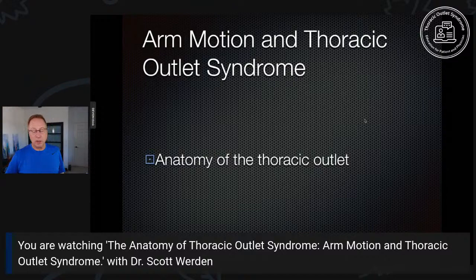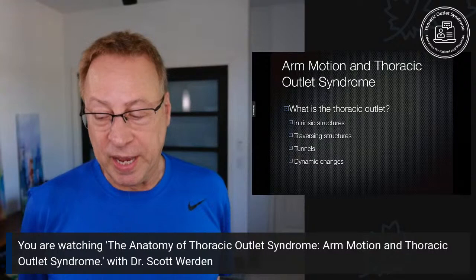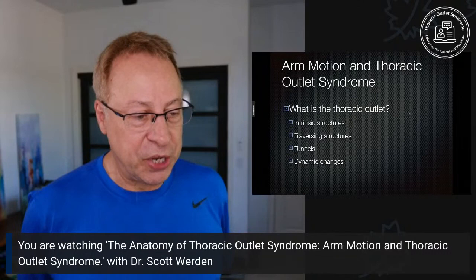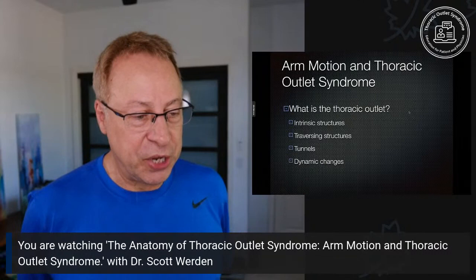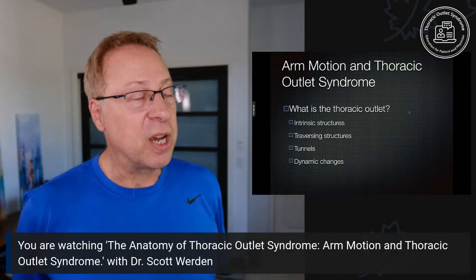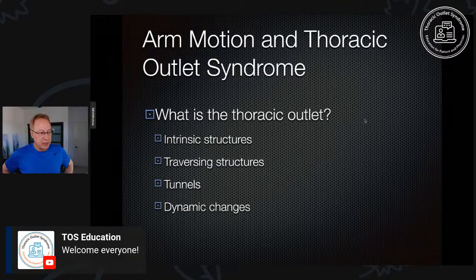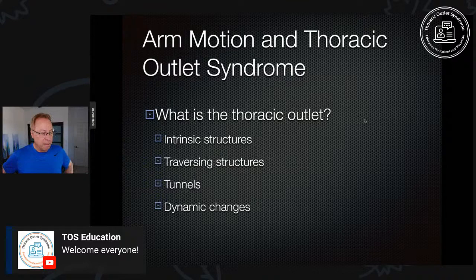Let's go over the key anatomy of the thoracic outlet. The intrinsic structures include the side of the cervical spine, the top of the chest, the beginning of the shoulder, the rib, and the collarbone. The traversing structures are the brachial plexus — a big nerve bundle — the subclavian artery, which provides almost all blood flow to the arm, and the subclavian vein, which drains almost all blood flow from the arm. When these structures are affected and result in symptoms, you get thoracic outlet syndrome.